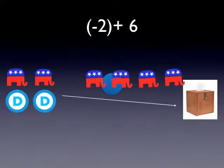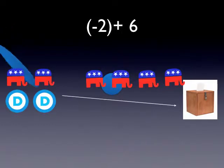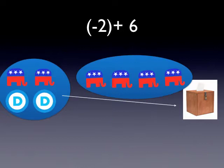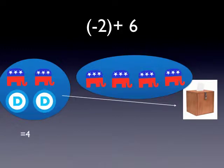Negative two plus six. Six Republicans are casting their votes, whereas only two Democrats are in the process of doing the same. When a reporter asked how many Republicans voted versus how many Democrats voted, it was estimated that four more Republicans than Democrats voted. And of course it equals four, since they're the only remaining numbers.